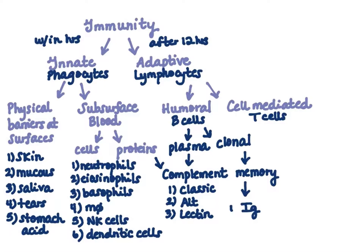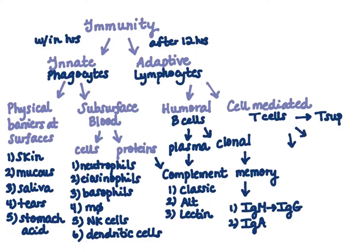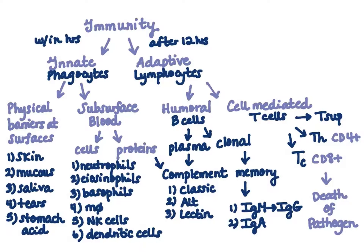Memory B cells make antibodies that will recognize the same antigen in the future — these are immunoglobulins: IgM, IgG, and IgA. Your cell-mediated immune system uses T cell lymphocytes: T suppressors, T helper (Th) cells, and cytotoxic T cells (killer cells). Th cells are known as CD4s; cytotoxic T cells are known as CD8s. Together they bring about the death of the invading pathogen.